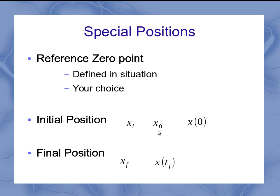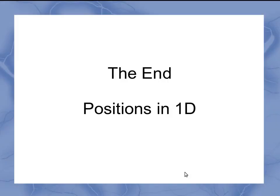If we're talking about our final position, similar to our initial position, it's often abbreviated as x sub f for the final position. But it's also written out as x of t sub f, or the position at the final time. So this just gives you an overview of some of the notation and special things to think about when we're dealing with positions in one dimension throughout the rest of this chapter.